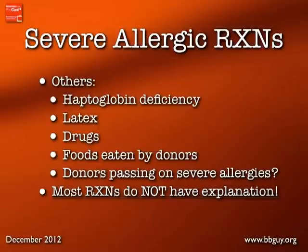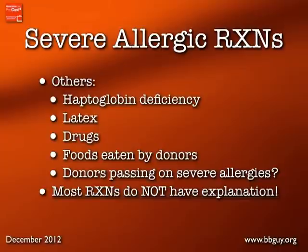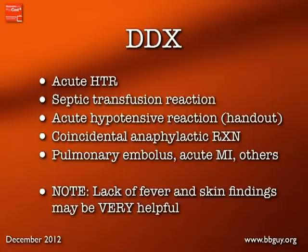Other causes of severe allergic reactions include haptoglobin deficiency (fairly common among Asians), latex allergies, drug allergies, and foods eaten by donors — including a reported case where a donor ate peanuts and the plasma was transfused to a child with a severe peanut allergy, causing an anaphylactic-like reaction. Most severe allergic reactions end up with no identifiable explanation.